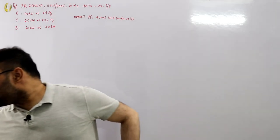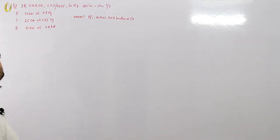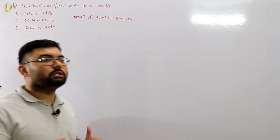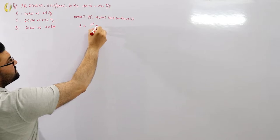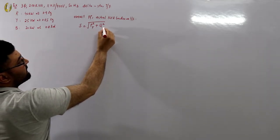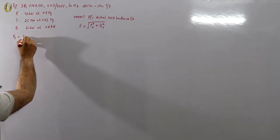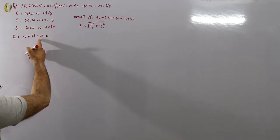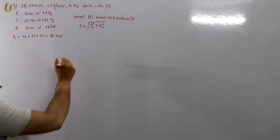For the transformer rating, you need the total kVA. To find total kVA, you need individual kVAs, but you cannot add them directly because they are not in phase. So you use S = √(P² + Q²), which requires the total P and total Q. P total is simply 40 + 25 + 20 = 85 kilowatts.